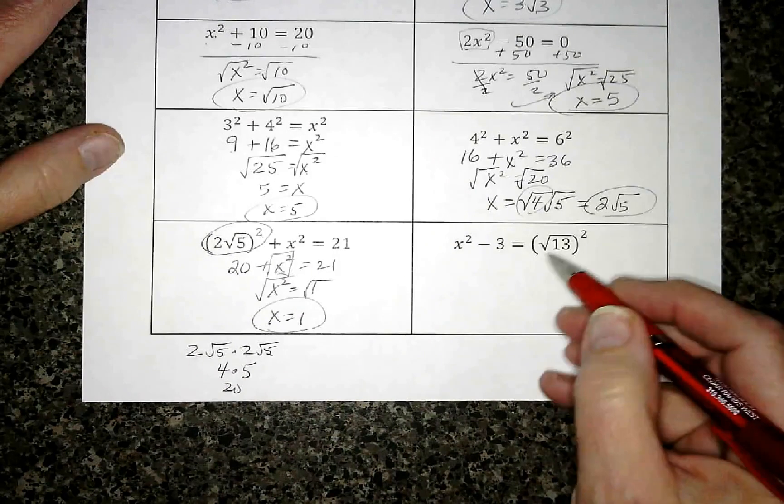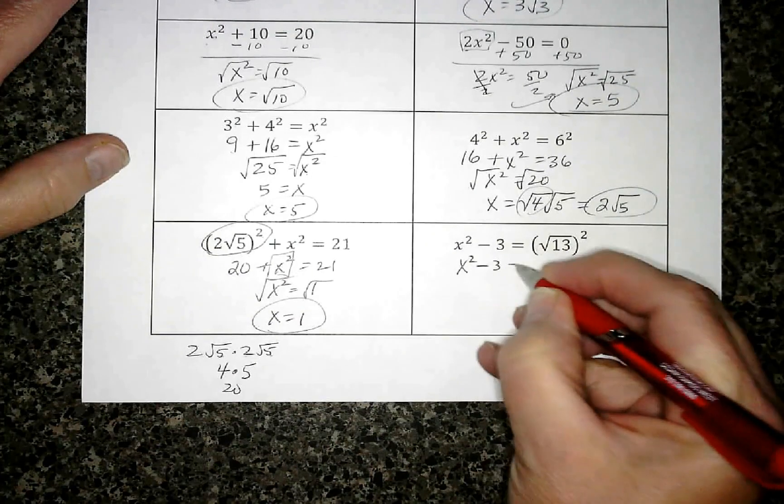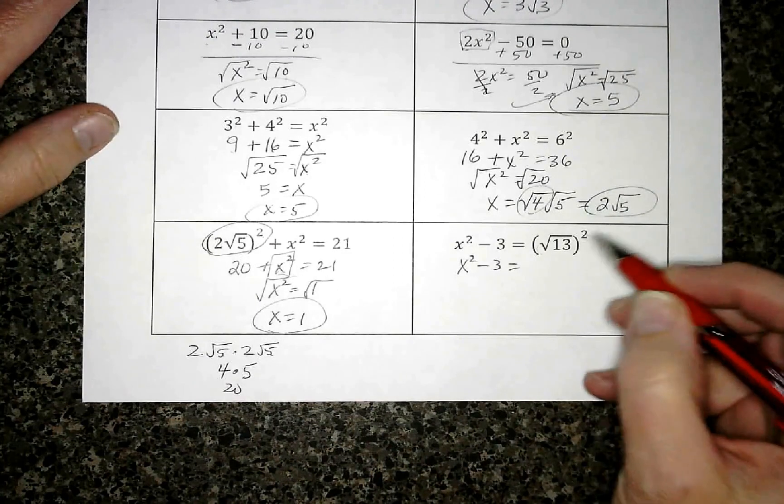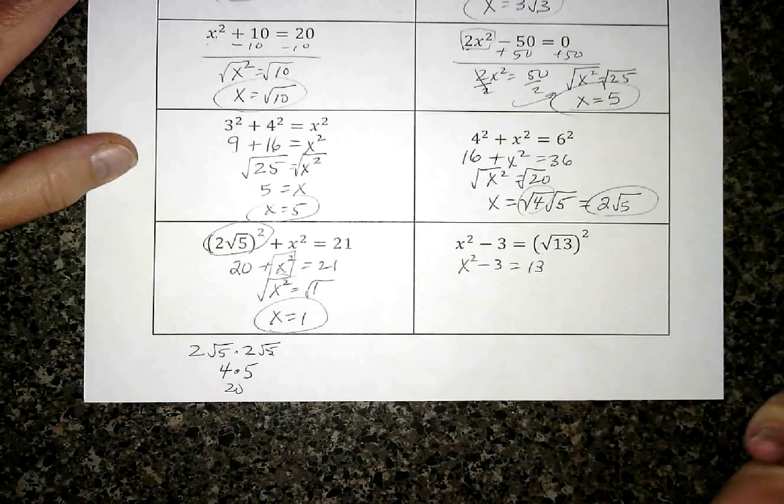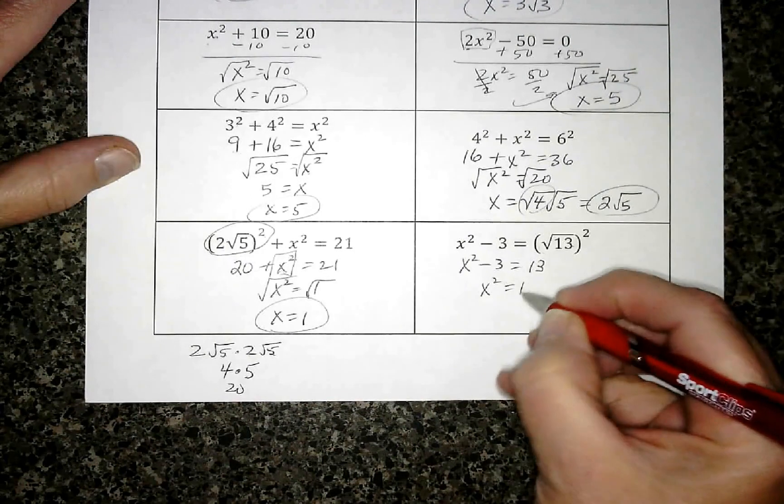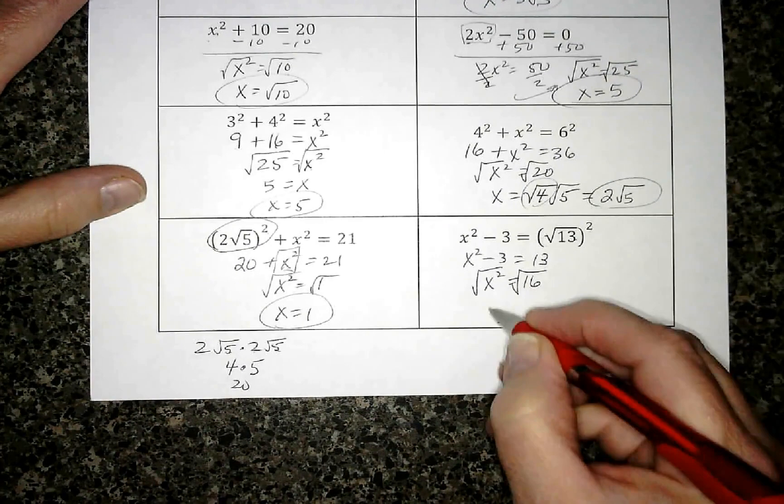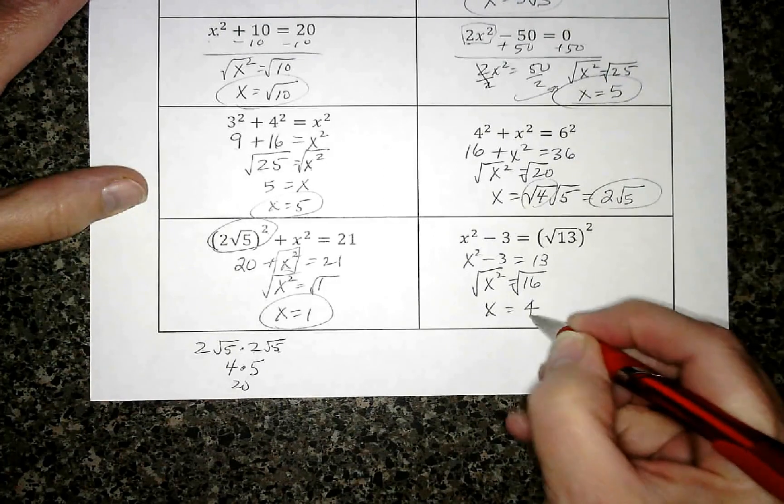Last one. Let's do this square first. √13 times √13 is plain old 13. I'm going to add 3 to both sides. I want x, so I square root. Square root of 16 is 4.